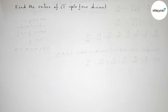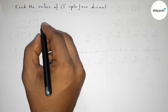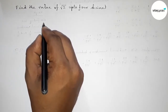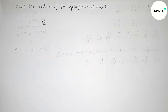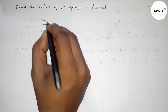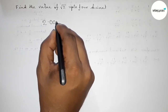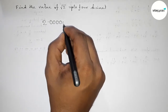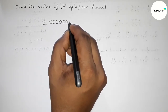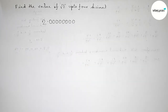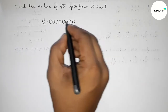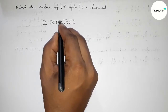First of all, write down the number 2. Next, take a decimal point, so we write 2.00000000 — that means 2. For 4 decimal places we have to write eight zeros after the point. Write down eight zeros and make them as pairs.